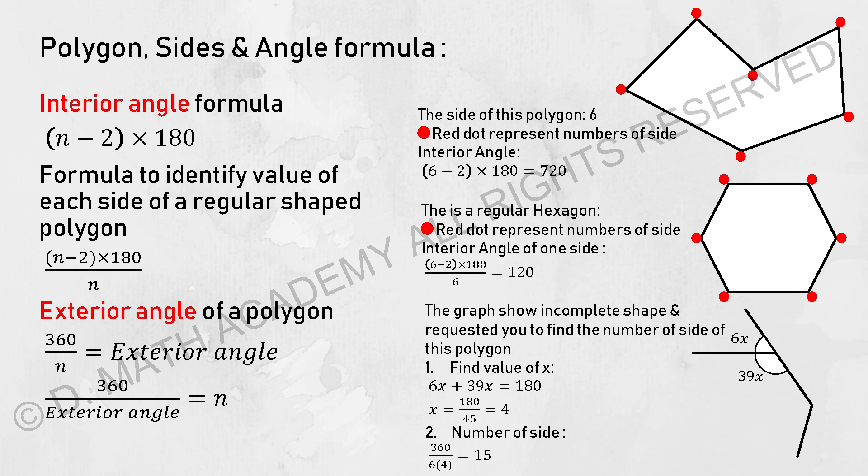If it is a regular polygon and all of the sides are the same, for you to identify each of the interior angles, just divide the results that you have gotten with the number of sides.